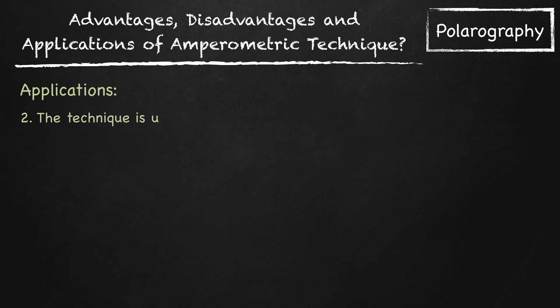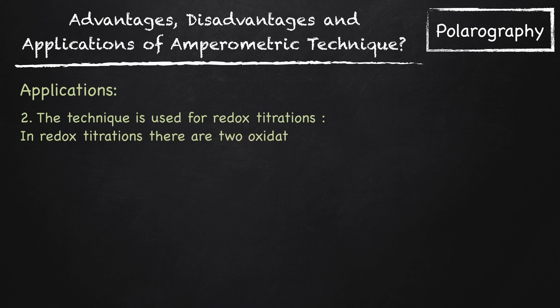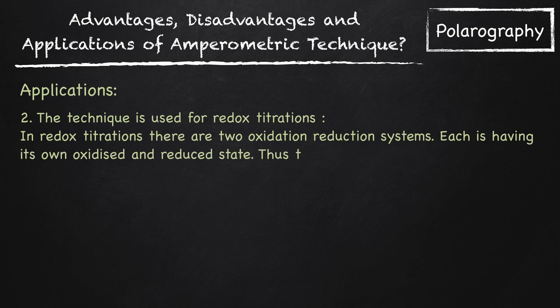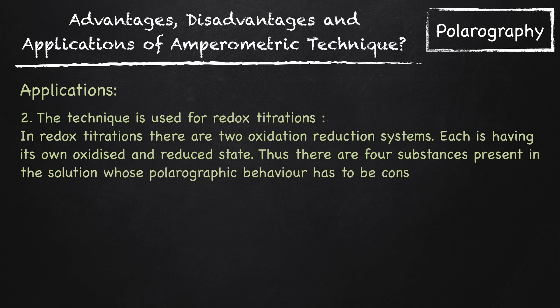Second, the technique is used for redox titrations. In redox titrations, there are two oxidation reduction systems. Each is having its own oxidized and reduced state. Thus, there are four substances present in the solution, whose polarographic behavior has to be considered.